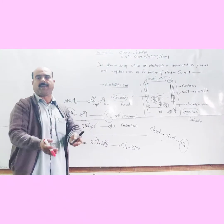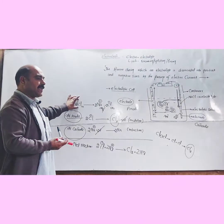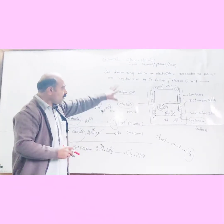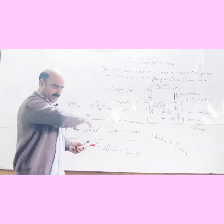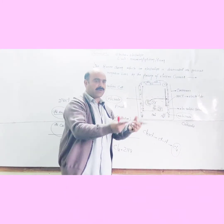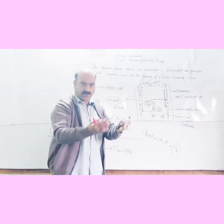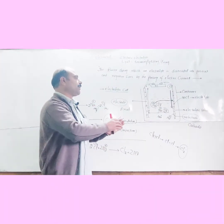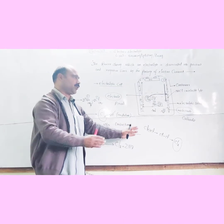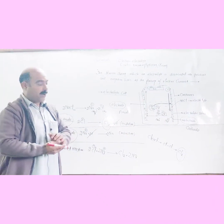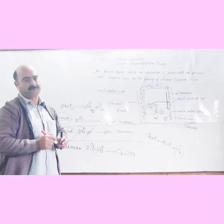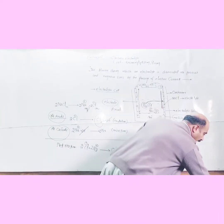Through electrolysis, we can get elements back from chemical compounds. This is the significance of electrolysis — through this process, from a compound like sodium chloride, we can obtain the elements chlorine and sodium. This entire process is known as electrolysis.